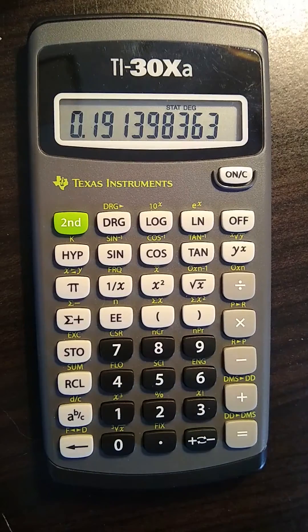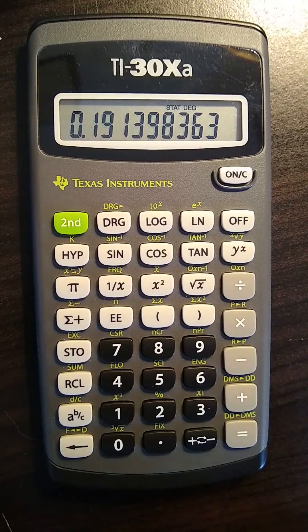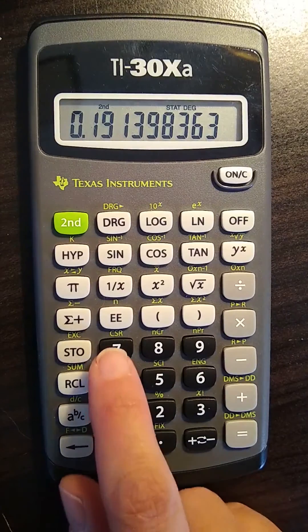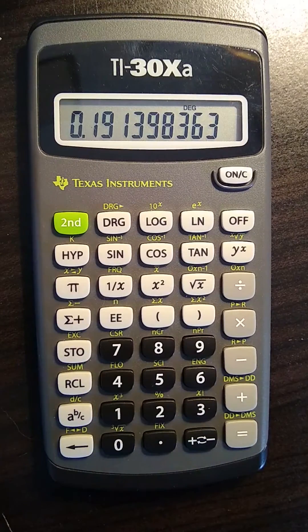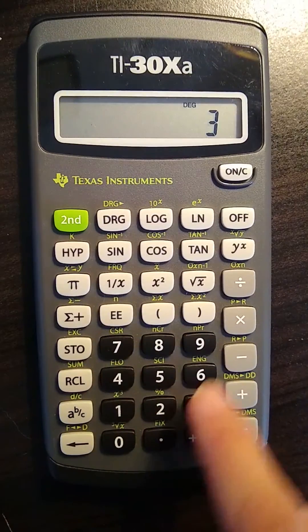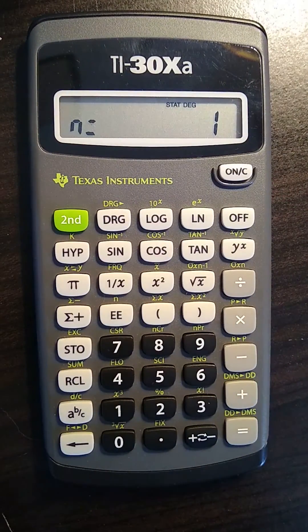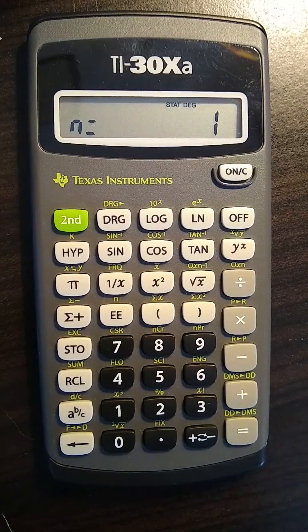If you want to clear out the data set, you can press second and then CSR, which is the 7 key. That's going to clear everything out. So now we can add another number and you'll see our n equals 1. We've basically erased our data set and we're starting a new one.